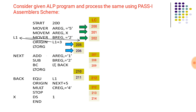LTORG is an assembler directive which assigns addresses to literals. Here we have two literals, 5 and 2, for which two addresses are generated. The next address is 207, which is assigned to the next assembly statement. The next LTORG statement generates addresses for two literals — literal 1 and literal 2 — as 210 and 211 respectively. The next address 212 is assigned to the following assembly statement.